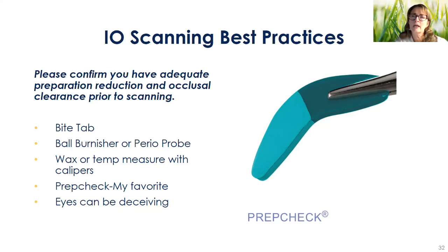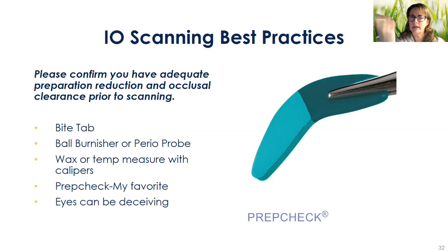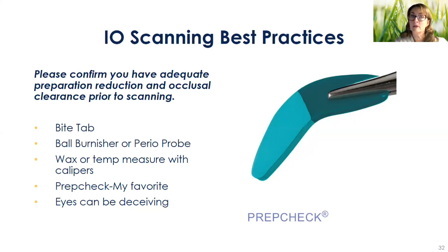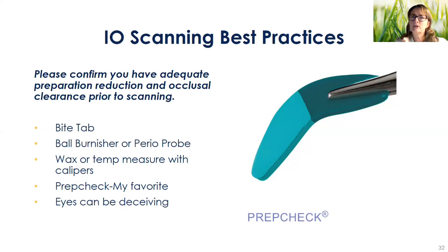My general philosophy is: let's take 10 seconds and confirm that you really do have enough occlusal clearance before you ever take that digital impression or a physical impression for that matter. There's something called PrepCheck — you put it over the patient's prep, have them tap, tap, tap. If it leaves a green mark, that means you don't have 1.5 millimeters of reduction there. Alternatively, use a piece of wax, have the patient bite in, and measure with calipers. Or if you make your temporary before taking your impression, you could do the same thing with the temp.